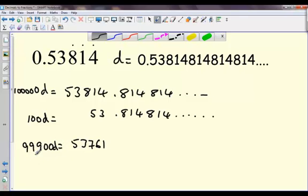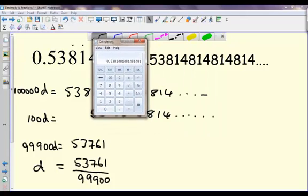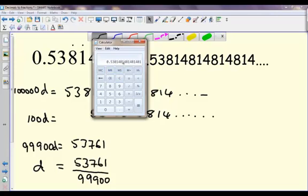So 99,900 d is equal to 53,761, or I can say that d is, divide both sides by 99,900, this number here, to give that fraction as my answer. 53,761 divided by 99,900 gives me that decimal that I wanted in the first place, 0.53, 814, 814, 814, and so on.